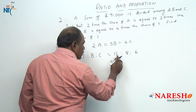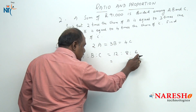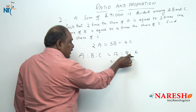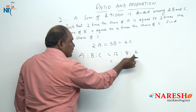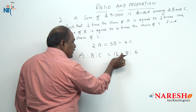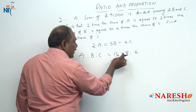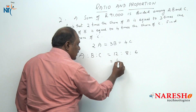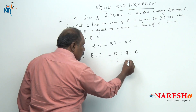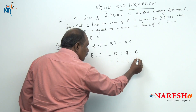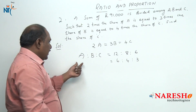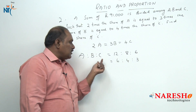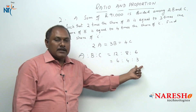So the ratio is 12 is to 8 is to 6. A ratio should always be expressed in lowest terms, so dividing each term by 2, it becomes 6 is to 4 is to 3. That is, A gets 6 parts, B gets 4 parts, C gets 3 parts.